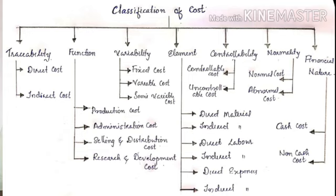The four categories on the basis of function are: production cost, administration cost, selling and distribution cost, and research and development cost. On the basis of variability, cost can be classified into fixed cost, variable cost, and semi-variable cost or semi-fixed cost.